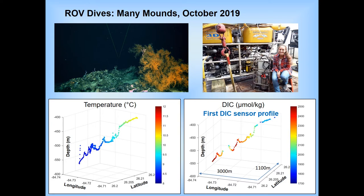We are excited about this deployment because we obtained the first-ever high-resolution DAC profiles in the ocean using an in-situ sensor. On the lower left, you see the temperature profiles over a deep coral mountain; on the right are the DAC profiles. Over a short distance of just hundreds of meters, you can identify large DAC concentration changes. This demonstrates that deep corals experience fine-scale changes of carbon chemistry. The next step is to identify whether these changes are related to the distribution or physiology of the deep coral community.